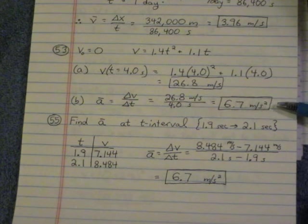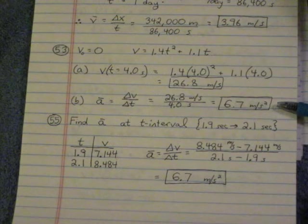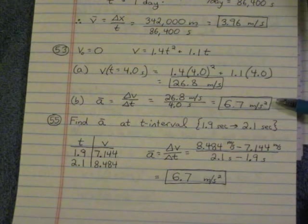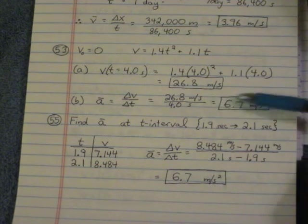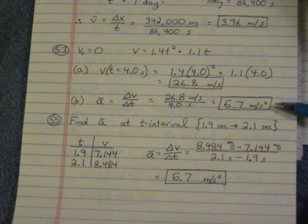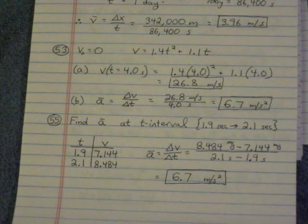Part B, average acceleration, is change in velocity over change in time. Well, it went from 0 to 26.8, so its change in velocity was 26.8 meters per second over a time of 4 seconds, so that's 6.7 meters per second squared.